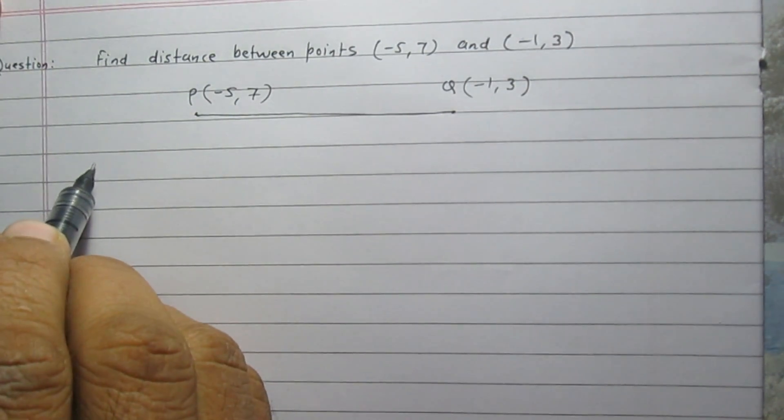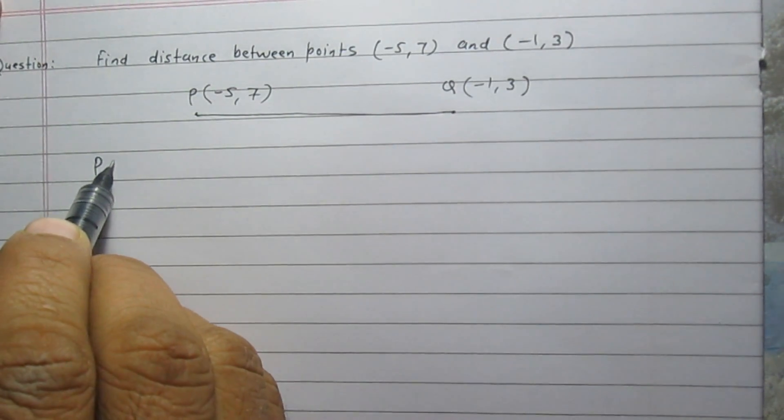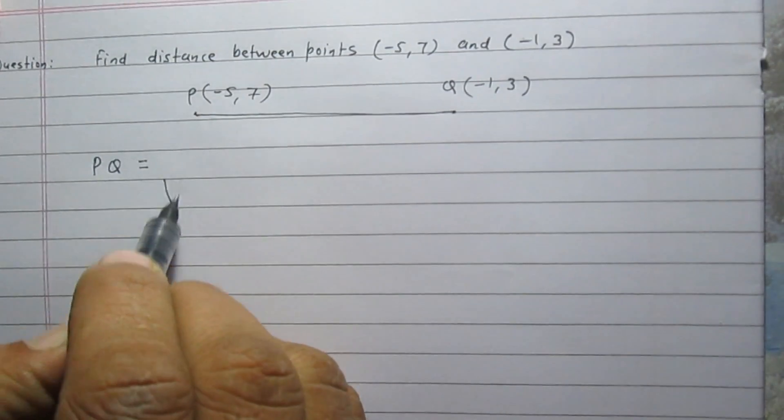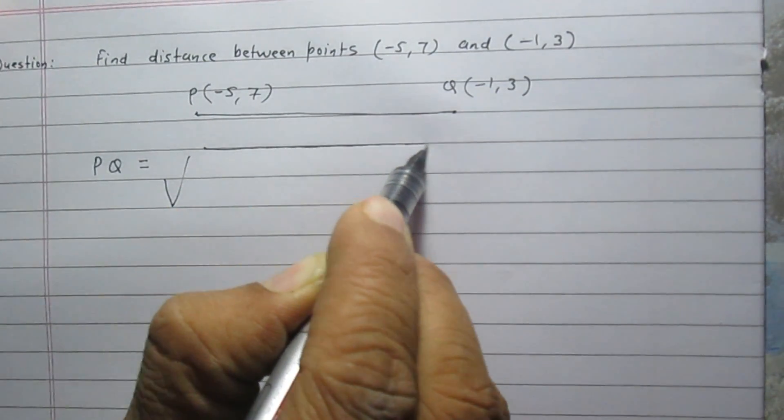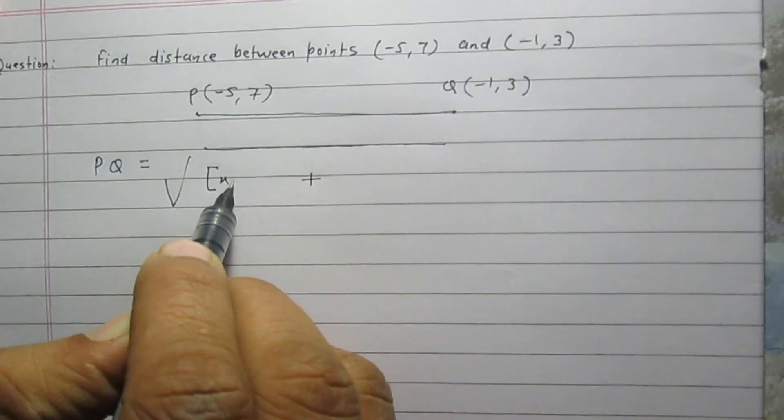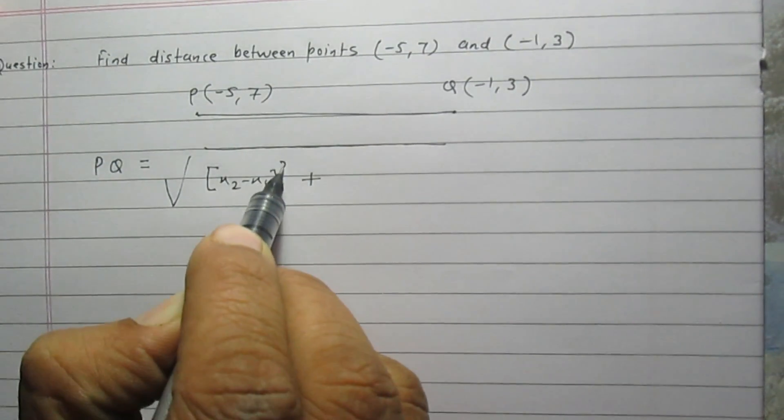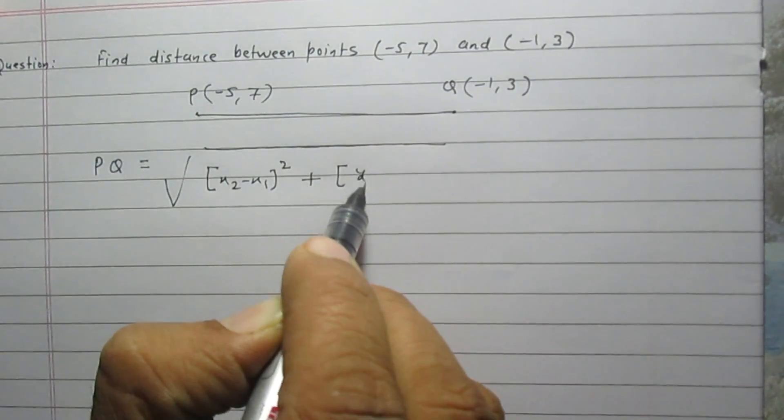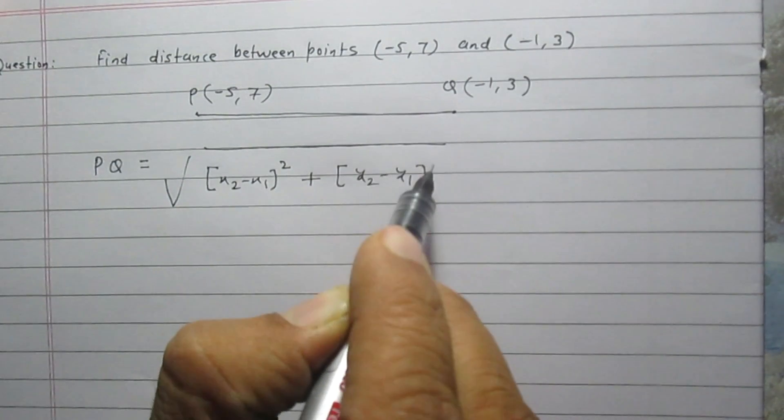According to the distance formula, distance PQ is equal to the square root of the sum of (x₂ - x₁)² and (y₂ - y₁)².